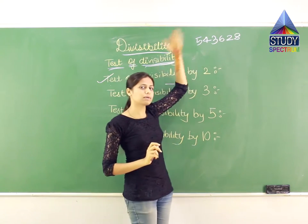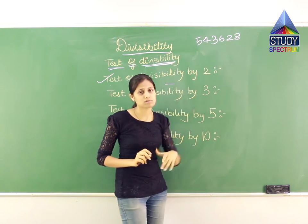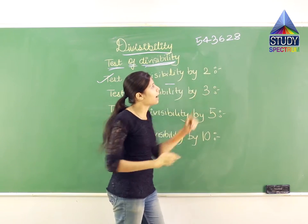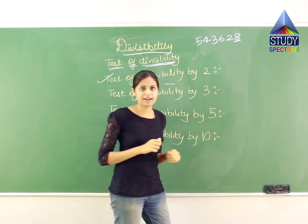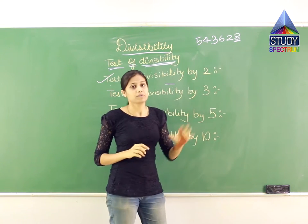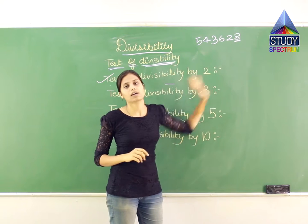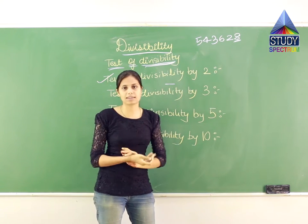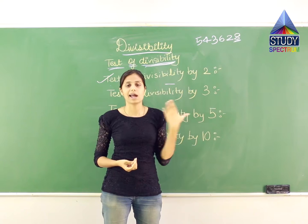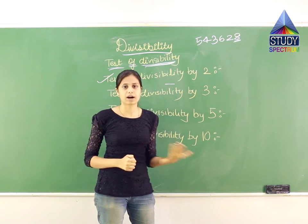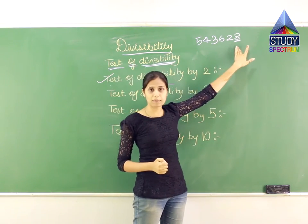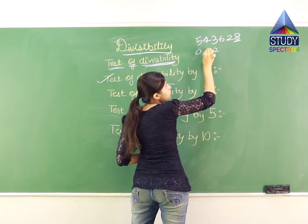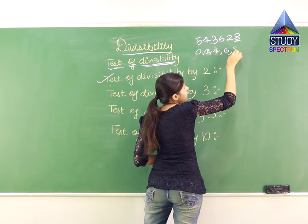Even though it's a big number, you don't need to recite the table of 2 all the way to that number. Simply consider the number in the unit place. Here it is 8. We check: is it an even number or an odd number? Even numbers are 0, 2, 4, 6, 8, 10 and so on. Odd numbers are 1, 3, 5, 7, 9, 11 and so on.